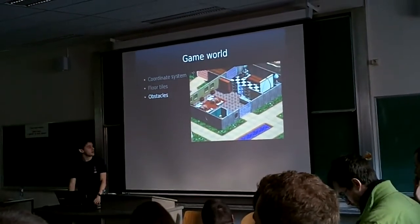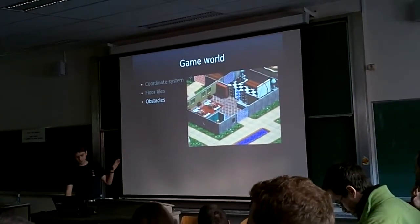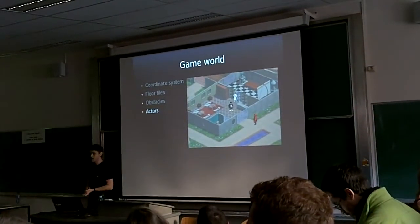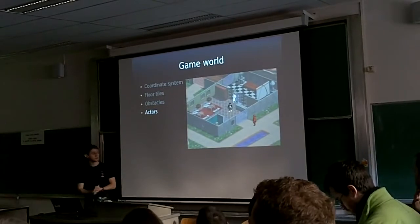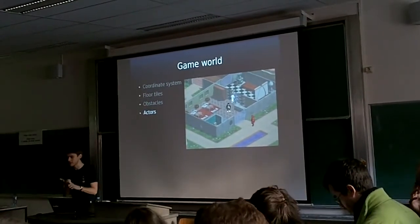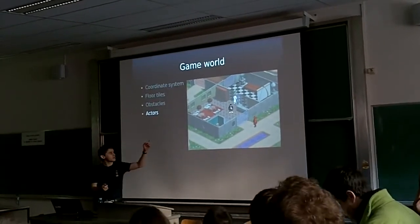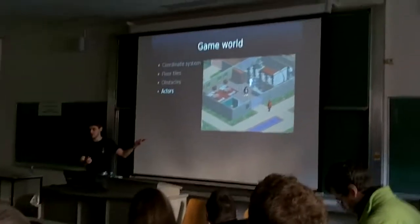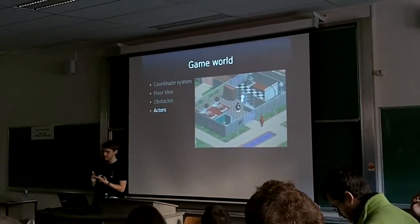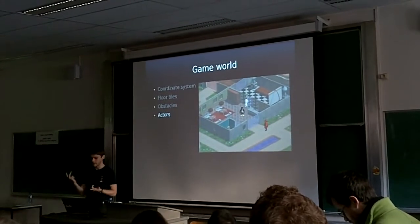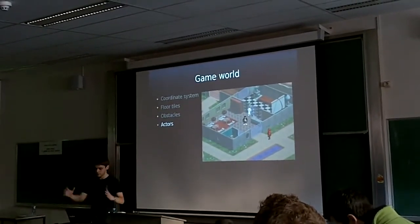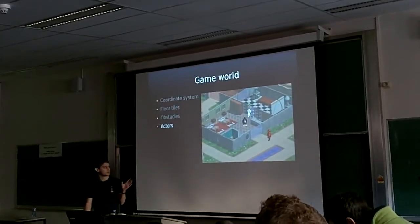Here you can see the floor tiles and the obstacles — this is the base world. On top of that we add the notion of actors. An actor is simply an element which has graphics, a physical presence, and the ability to initiate actions in the world. So you have the player and two artificial intelligence characters. They have the ability to move, attack, initiate dialogues, and interact with obstacles — for example, you can connect to a computer terminal.